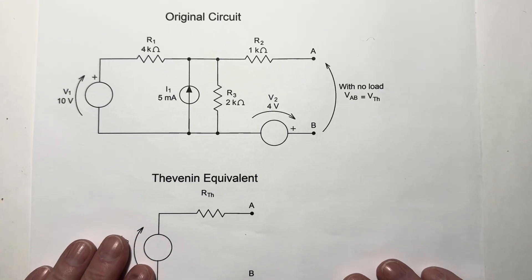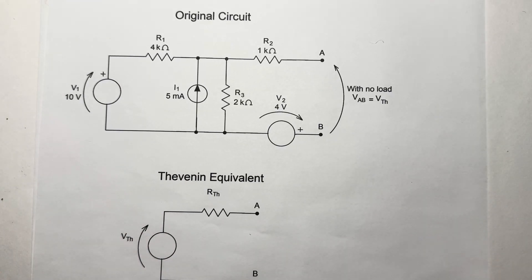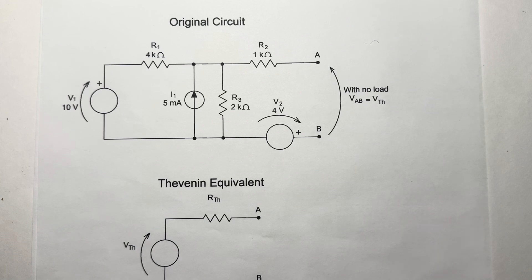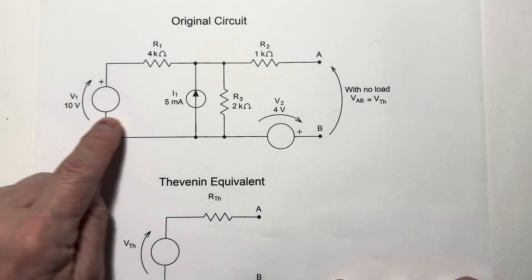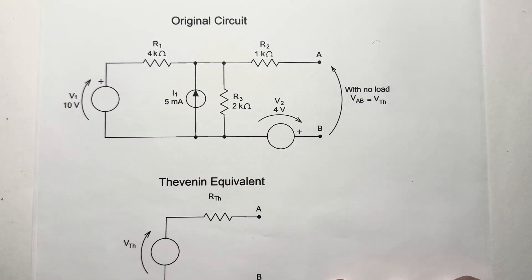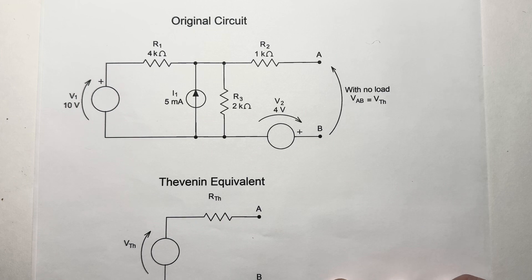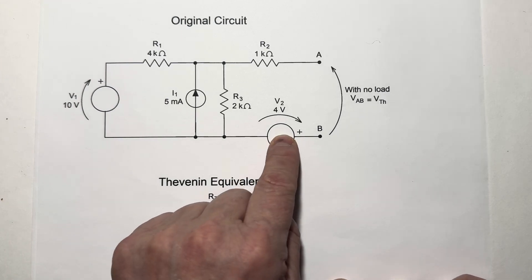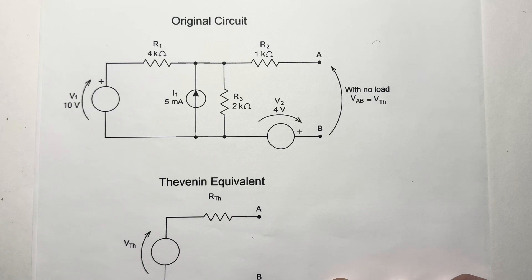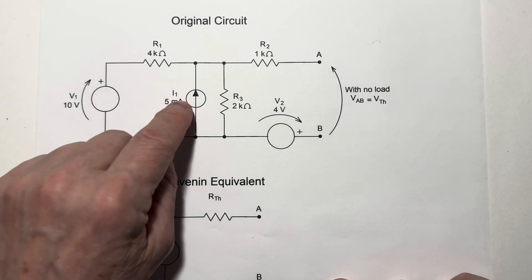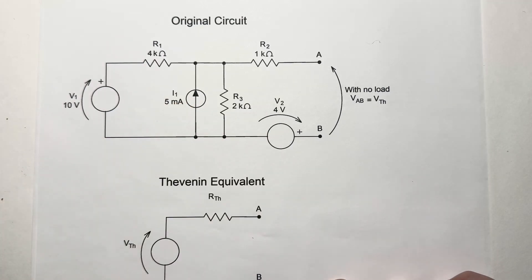Now, for determination of the Thevenin voltage, we're going to apply the superposition theorem. That is, we're going to analyze this circuit three times. Once with V1 active, I1 and V2 deactivated. Once with I1 active, V1 and V2 deactivated. And once with V2 active, I1 deactivated and V1 deactivated. Let's start by deactivating I1 and V2.